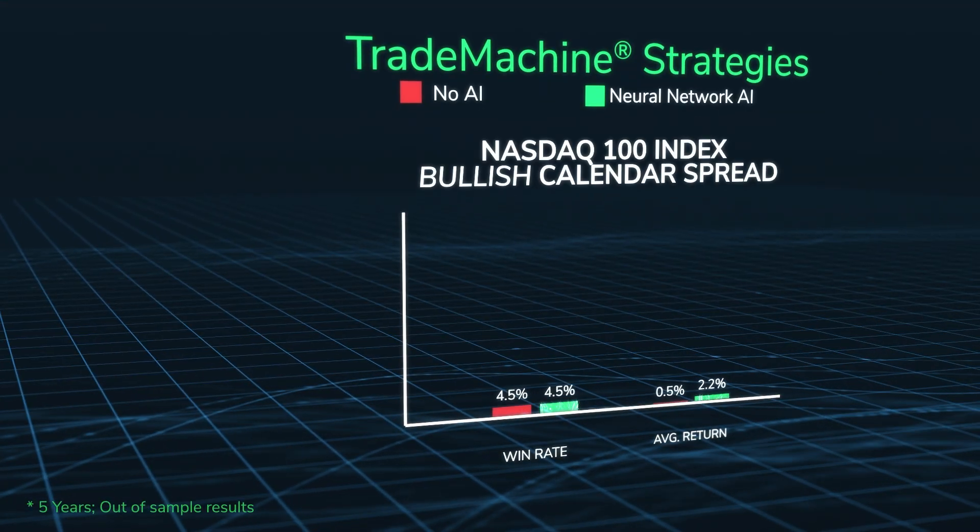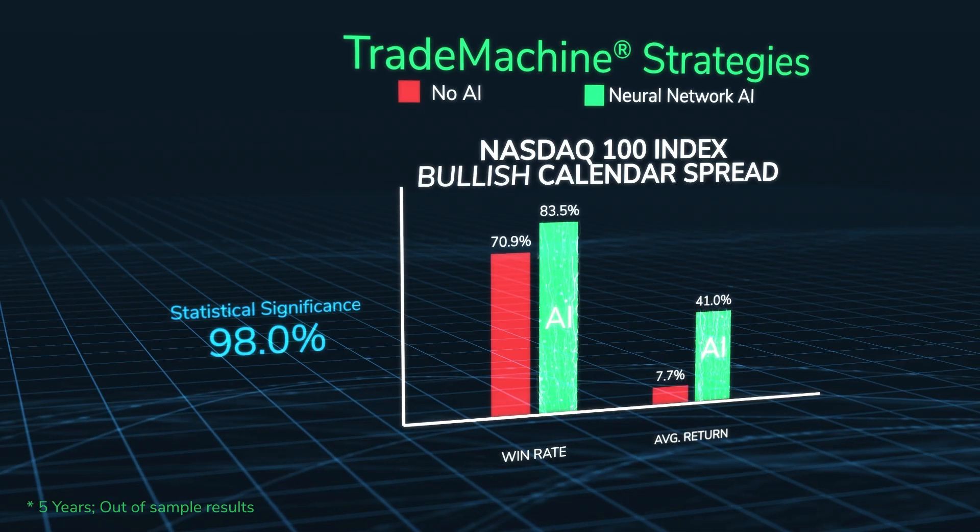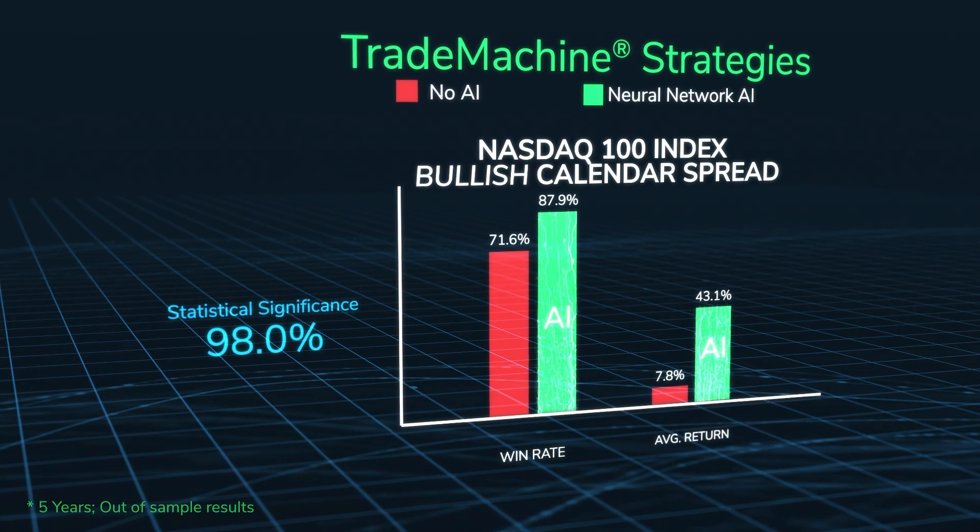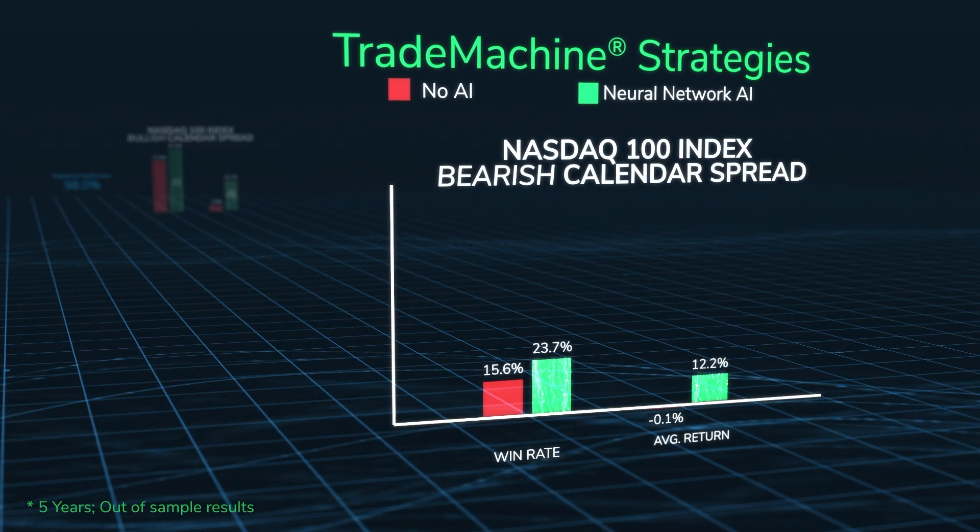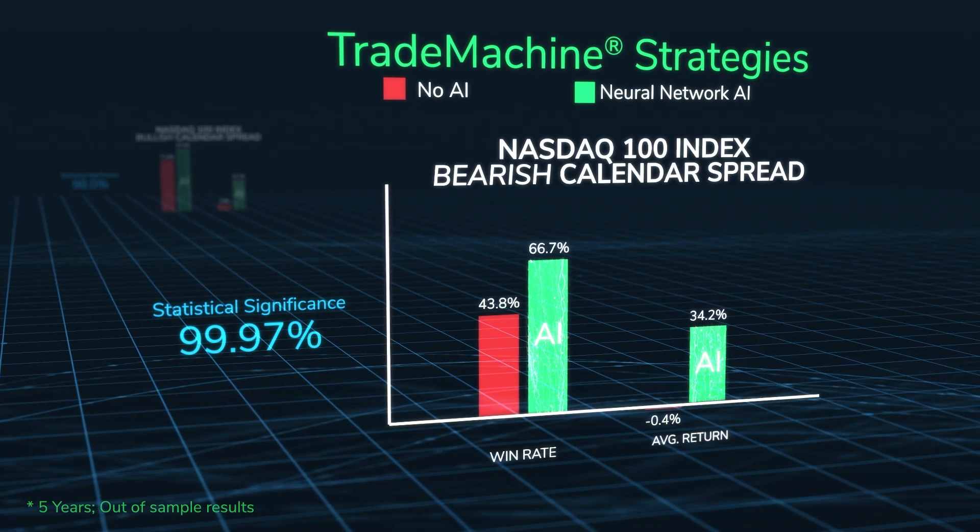This is what modern market modeling looks like: not predicting the future with certainty, but measuring the odds more accurately than before—higher win rates and larger average returns. And the signal is clear, not noise.